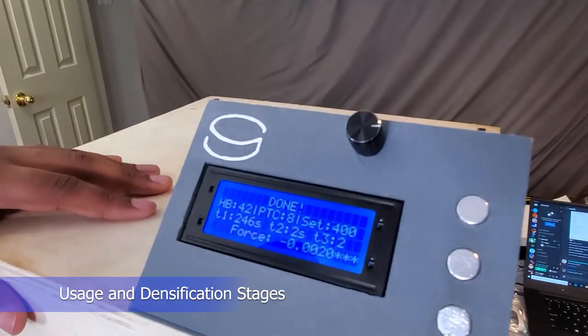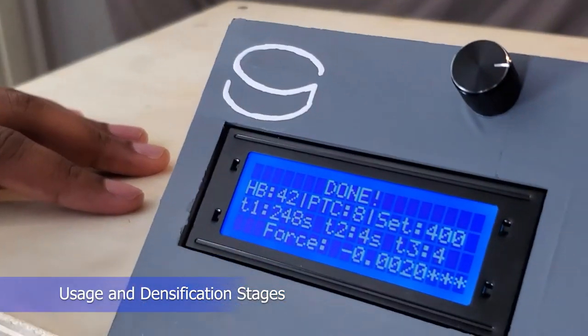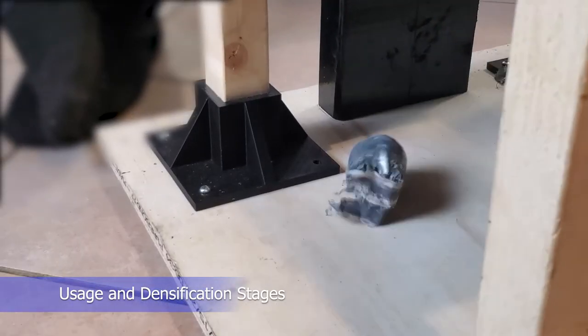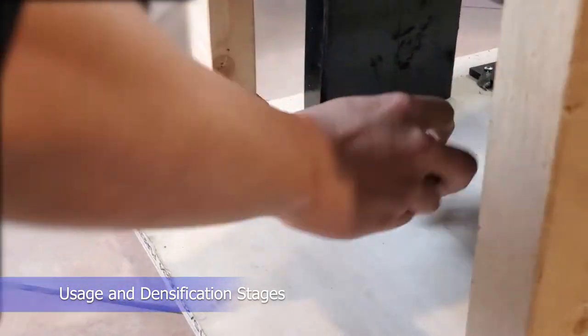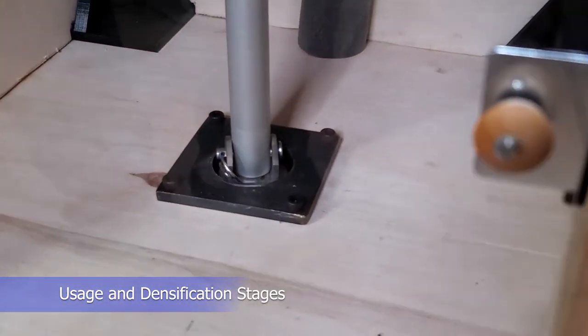The user simply presses the navigation buttons and clicks start on the main menu to begin the densification process. At this point, all that's left for the user is to wait and collect the finished product when the screen displays the done message. While the user waits, the appliance operates through a total of six stages.